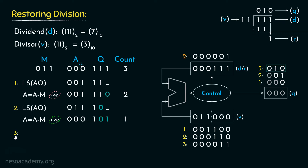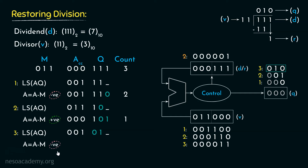In the third and last iteration, we again left-shift the entire content of the accumulator and Q register. We then perform A = A − M. The M register holds 011, while the accumulator holds 001. Since 001 is smaller than 011, the subtraction result is negative. As before, we restore the accumulator to its previous content and set Q0 to 0. The count becomes 0. We obtain the quotient 010 from the Q register and the remainder from the content of the accumulator by the end of the procedure.